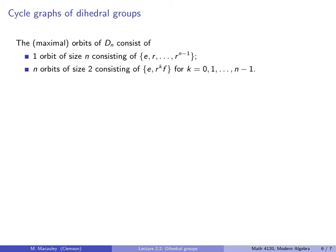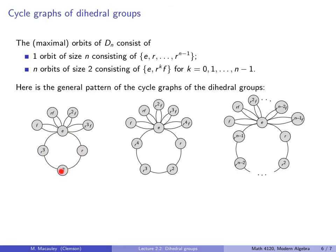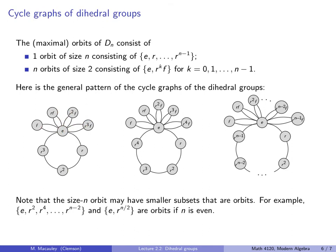Let's talk about the cycle graphs of dihedral groups. The maximal orbits of D_N consist of one orbit of size N containing all of the rotations — generated by R — and then there are N orbits of size 2, each consisting of the identity and some reflection, because each reflection generates an orbit of size 2: itself and the identity. Note that the large orbit may have smaller subsets that are orbits, but we don't necessarily draw those. Unless N is prime, this is typically going to have sub-orbits as well.